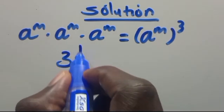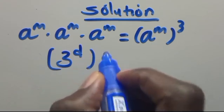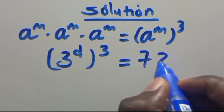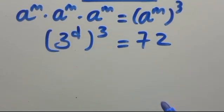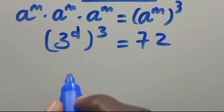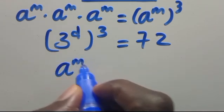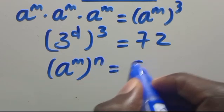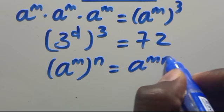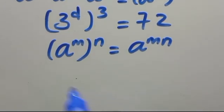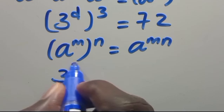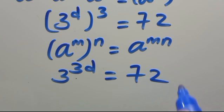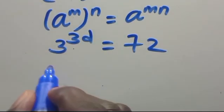Likewise applied to this problem, we have t to the power of D in brackets to the power of 3D equals 72. And recalling that when we have a to the power of M in brackets to the power of N, this equals a to the power of M times N, so this gives us t to the power of 3D equals 72.